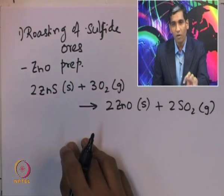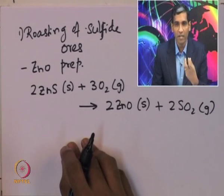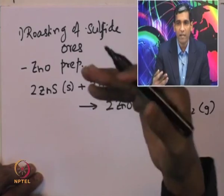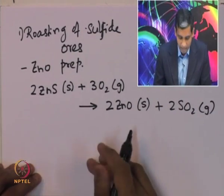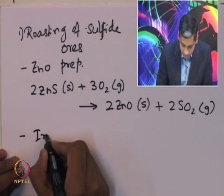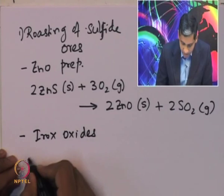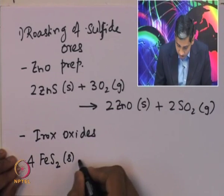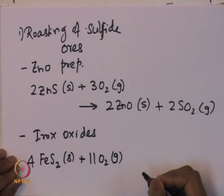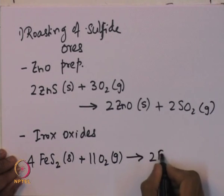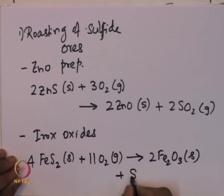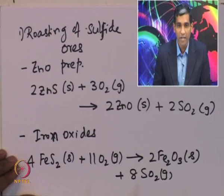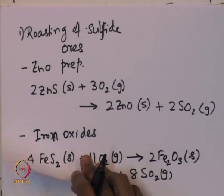In the industrial process, the ore is crushed, sized, and placed in a reactor where air is fed and reacts with zinc sulphide to form solid zinc oxide. Another example is the preparation of iron oxides: 4FeS₂ (solid) + 11O₂ → 2Fe₂O₃ (solid) + 8SO₂ (gas), which also follows this first mode.